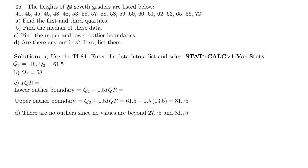In problem 35, we have heights of 20 seventh graders that are listed here. We want to find the first and third quartiles, find the median, upper and lower outlier boundaries, and then if there are any outliers.